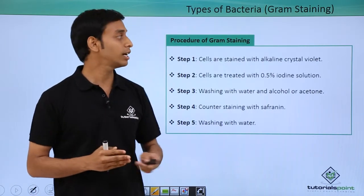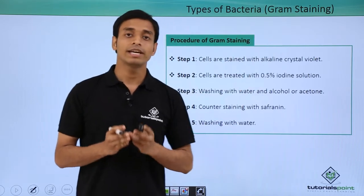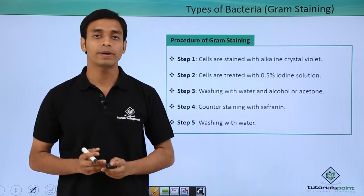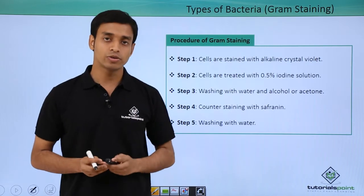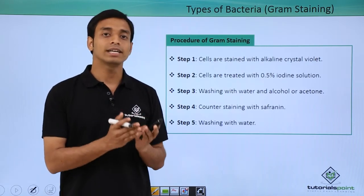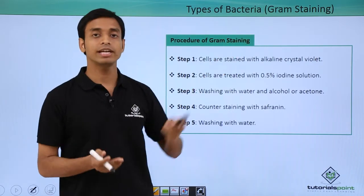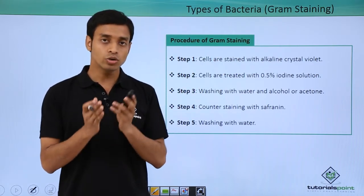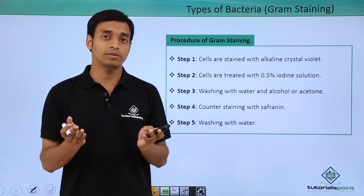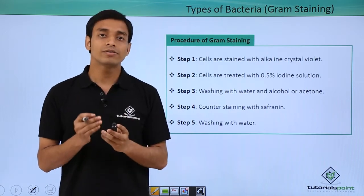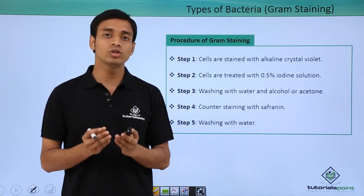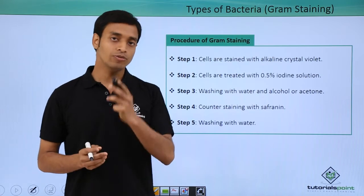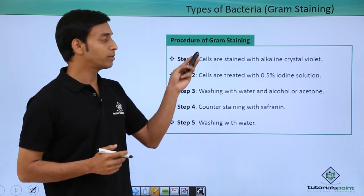Now let's look at another classification of bacteria based on gram staining. Gram staining is a technique developed by scientist Hans Christian Gram. Based on this technique, bacteria are classified into two main types. Gram staining uses dyes to color the bacterial cells.